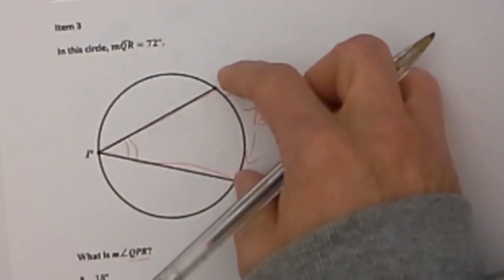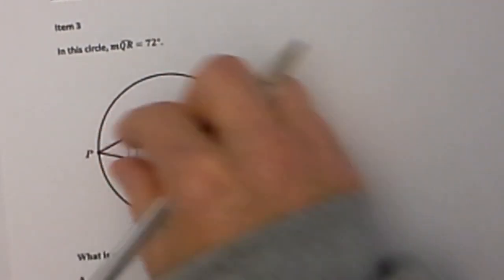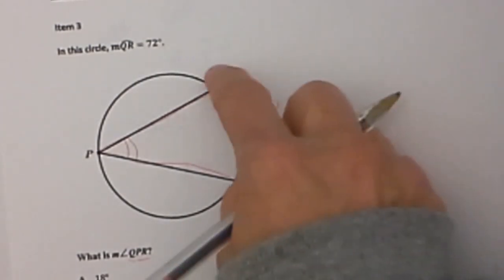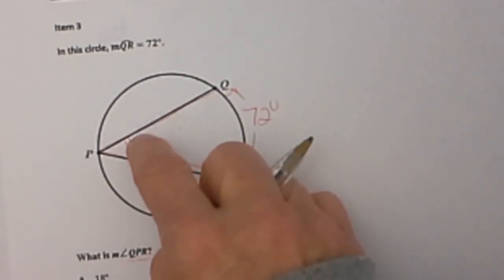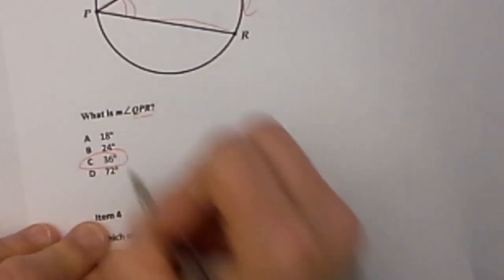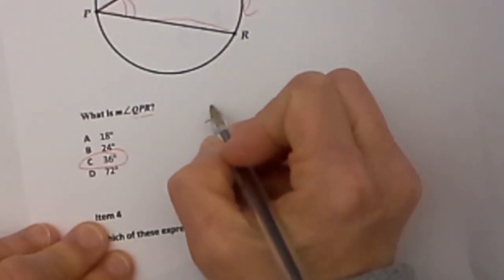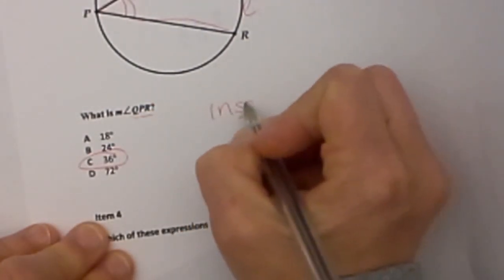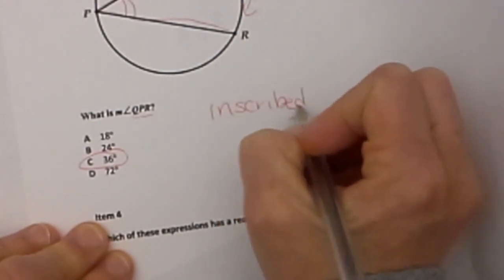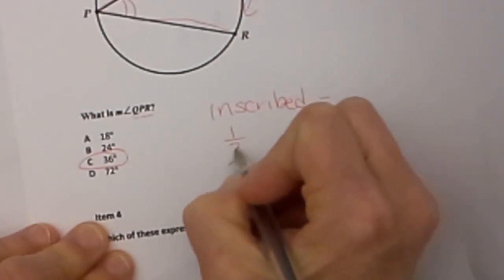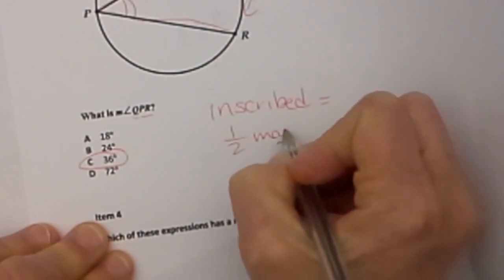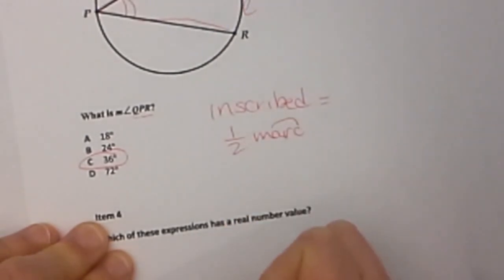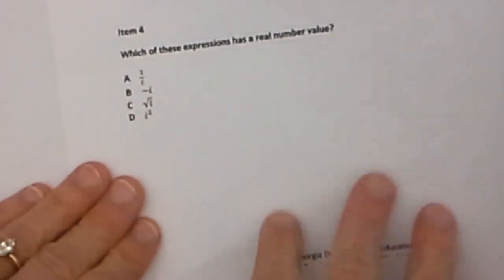Well, this is what we call an inscribed angle. And the rule is half of the arc. So if this is 72, then this angle must be half of it, which is C, 36. So that inscribed angle is equal to one half the measure of the arc. So hopefully that will help.